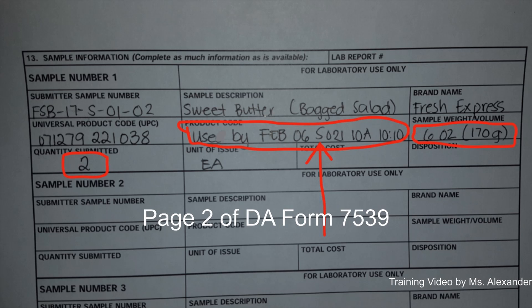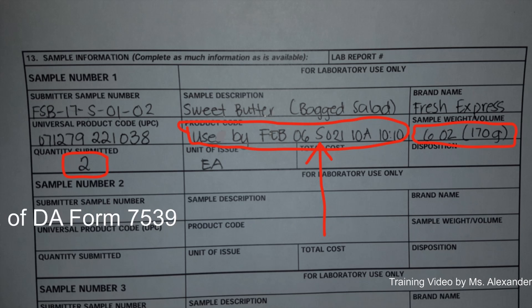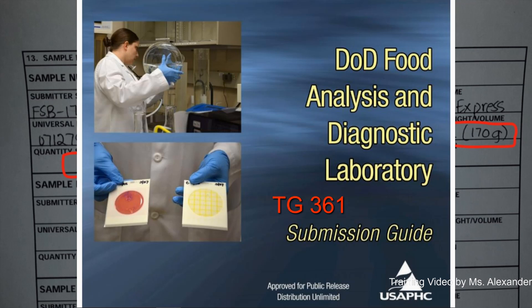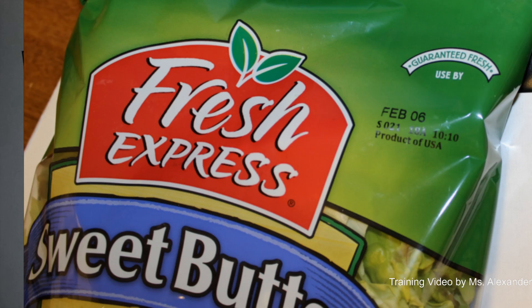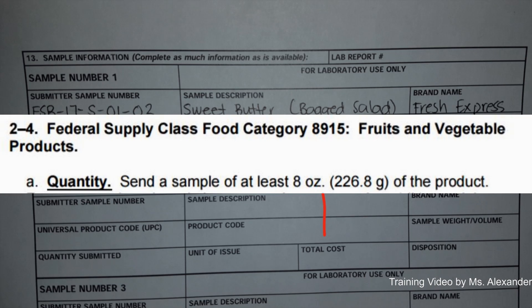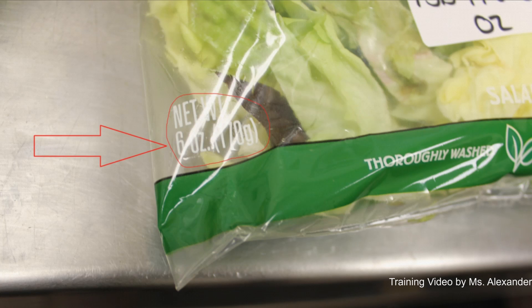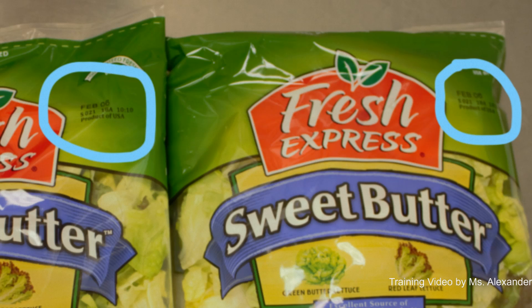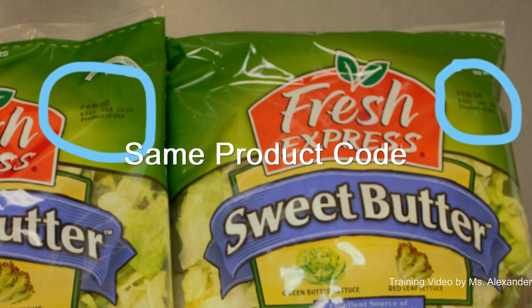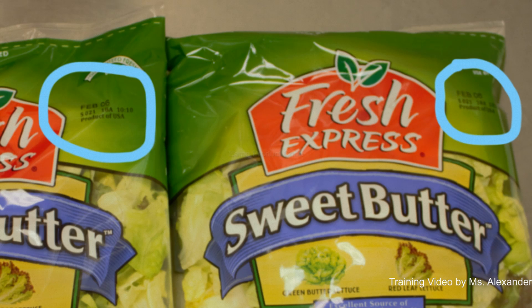Filling out page 2 of the DA Form 7539 is also important. You must read the lab sample submission guide to determine how much sample you need to send. In this example, the lab needs at least 8 ounces. The facility only has 6 ounces per bag. In order to meet the requirement, you need to pull two bags, which equals 12 ounces. When pulling two bags to meet the requirement, you must ensure that the product codes match in order to be acceptable and testable in the lab.